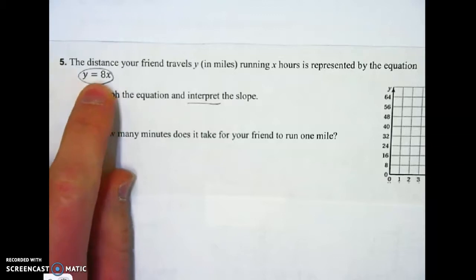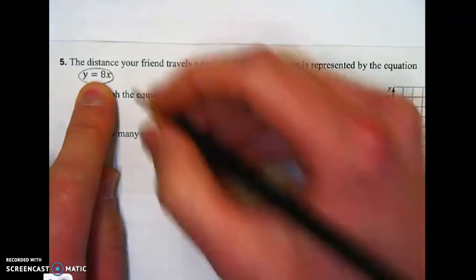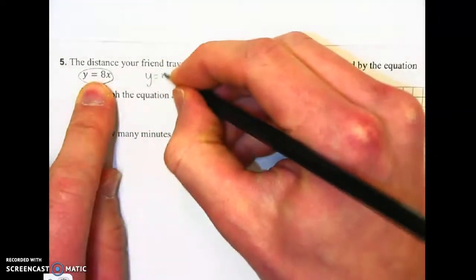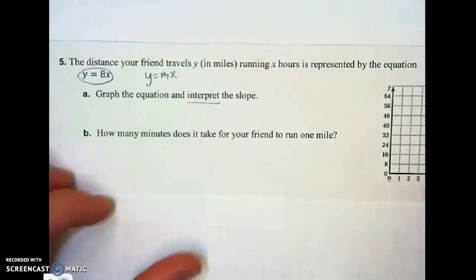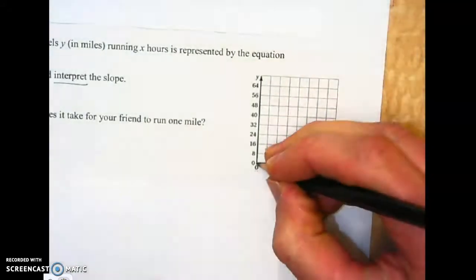So I know that this equation starts at 0, 0. You should know that at this point. An equation that looks like y equals mx just goes through 0, 0. It's a proportional relationship. So on my graph, I'm going to put a dot at 0, 0.